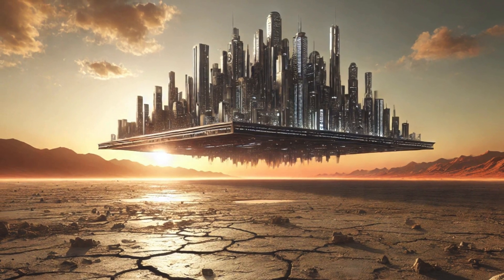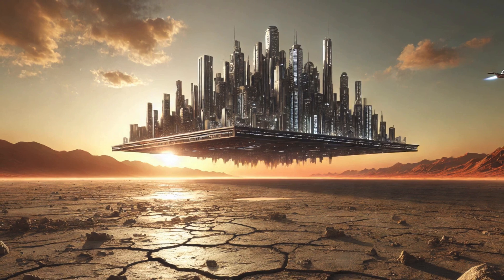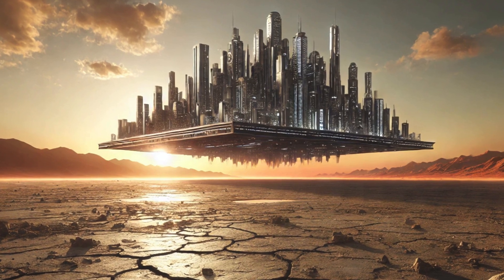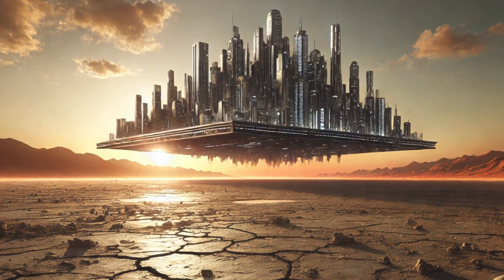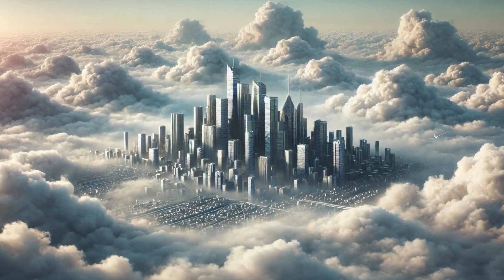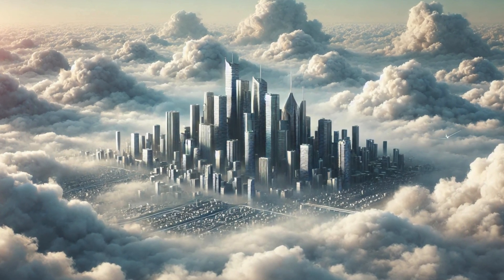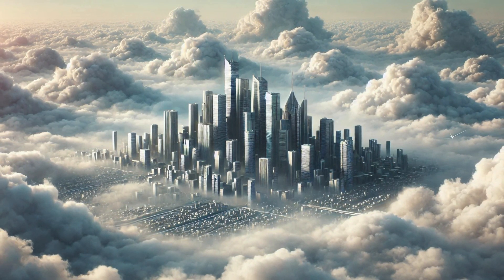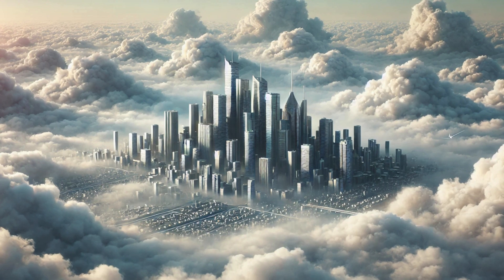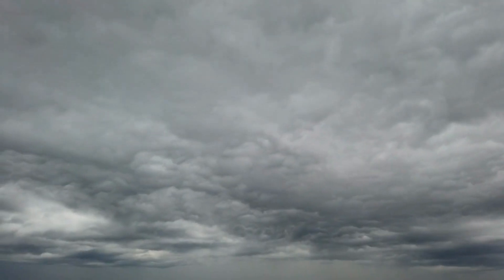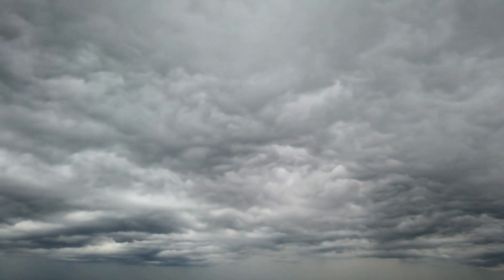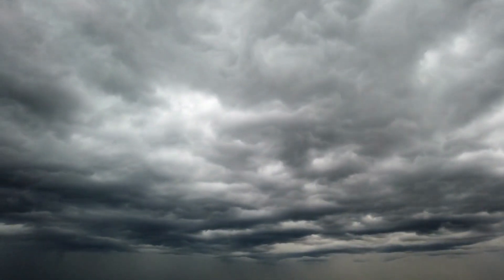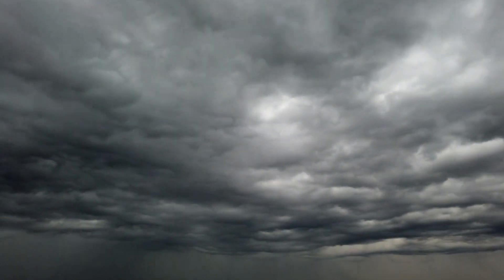But here's where it gets interesting. We don't need to live on the surface of Venus. Instead, we could float above it. That's right. Imagine entire cities suspended in the clouds. Venus's atmosphere, at about 30 miles up, is a lot more manageable. It's still crazy, don't get me wrong, but temperatures are much more bearable, around 75 degrees Fahrenheit. And the atmospheric pressure is about the same as Earth's. It's almost like Venus is offering us a hidden sweet spot, a layer where we could potentially thrive.